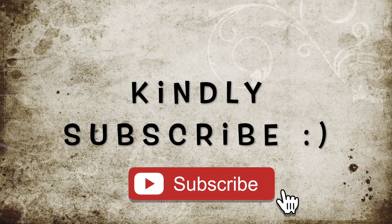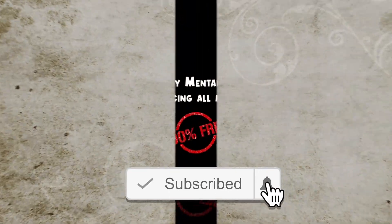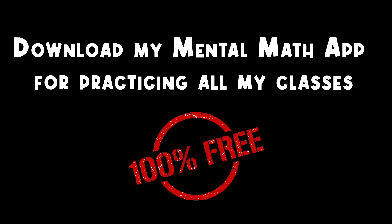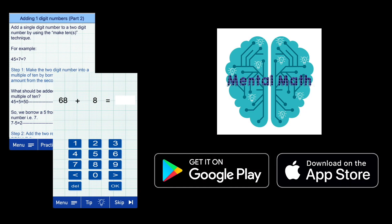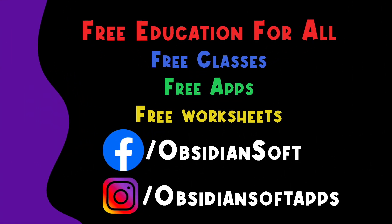And if you haven't subscribed to my channel, kindly do so. You can also download my mental math app for practicing all my classes. It is 100% free and available on Google Play Store and the Apple App Store. And the best thing about this app is that you have a timer there. So, you solve the questions in your brain with the timer and it will get you better at mental math. I'm also making worksheets for these mental math classes. After almost every two classes, I make these worksheets and publish them on my Facebook page. So, you can use them, print them out and practice your mental math.